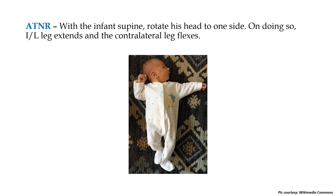The asymmetric tonic neck reflex: with the infant supine, his head is rotated to one side. On doing so, the ipsilateral leg extends and the contralateral leg flexes. As you can see here, the infant's head is rotated to the left side — the left leg is extended and the right one is flexed.